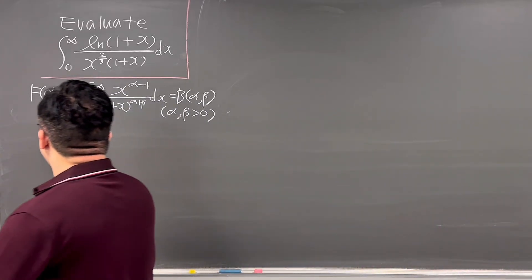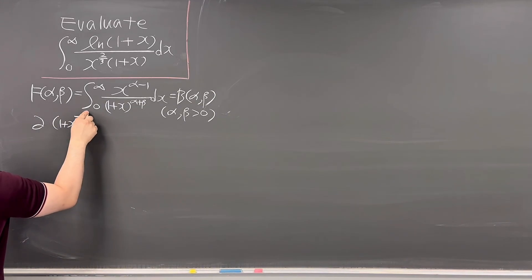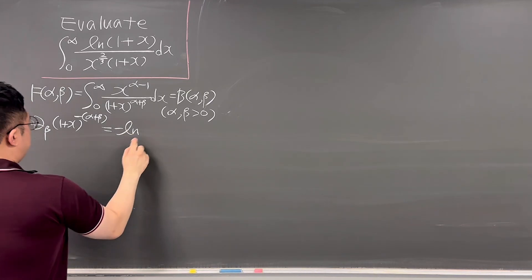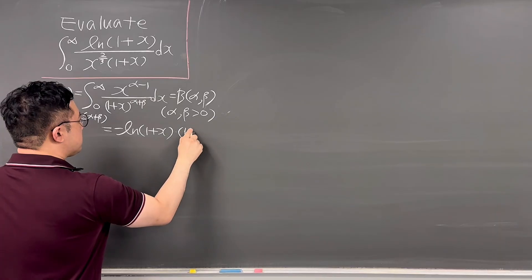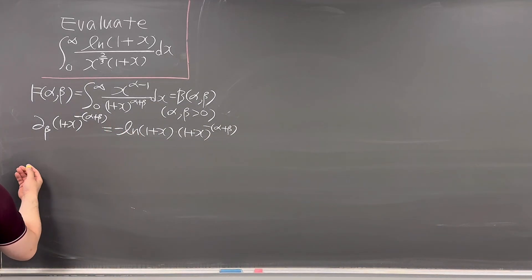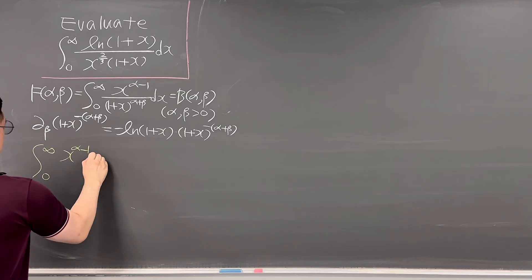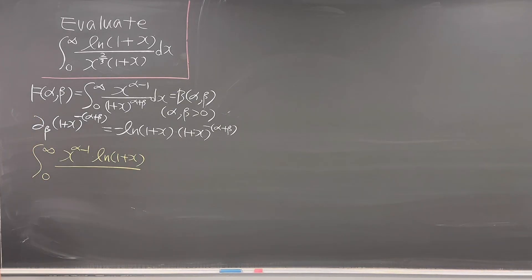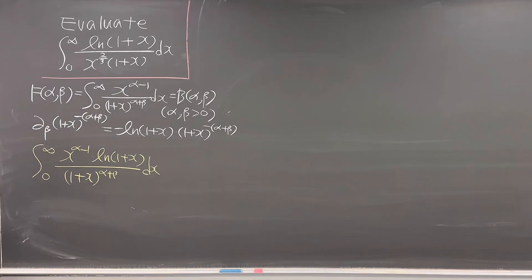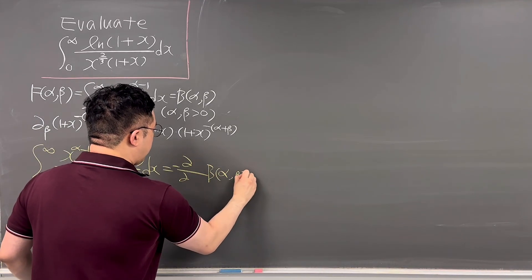Differentiating with respect to β, the derivative of (1 + x) to the power of negative (α + β) with respect to β is negative ln(1 + x) times (1 + x) to the power of negative (α + β). So the integral from 0 to infinity of x^(α−1) times ln(1 + x) over (1 + x)^(α+β) dx equals negative ∂/∂β of B(α, β).